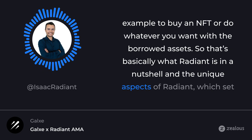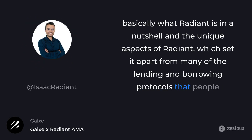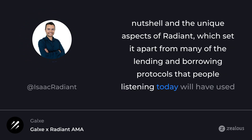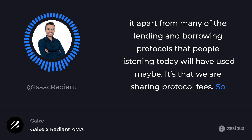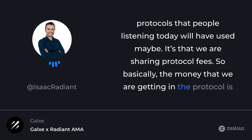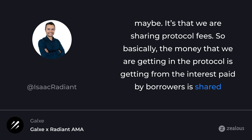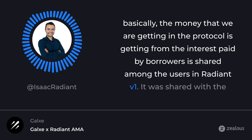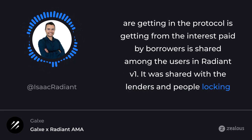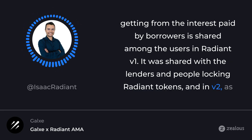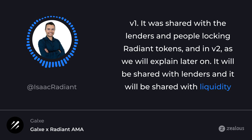The unique aspects of Radiant that set it apart from many of the lending and borrowing protocols is that we are sharing protocol fees. The money we receive in the protocol — from the interest paid by borrowers — is shared among users. In Radiant v1, it was shared with lenders and people locking Radiant tokens, and in v2, it will be shared with lenders and liquidity providers.